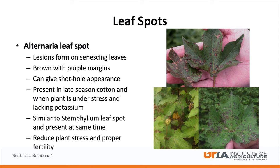Alternaria leaf spot is usually present in late season cotton when plants are under drought and nutrient stress. Usually this disease does not cause yield loss, but reducing plant stress such as through irrigation, proper fertility, and especially the use of potassium, can help mitigate this disease.